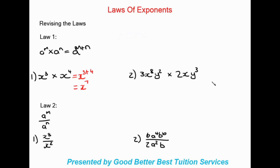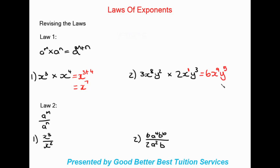Now looking at an example with coefficients and variables: we look at the coefficients first, so three times two gives us six. Then we look at x — remember there's an invisible one on top — so it's x to the power of eight plus one, which gives x to the nine. Then y is two plus three, giving us five. So the final answer is six x to the power of nine, y to the power of five.